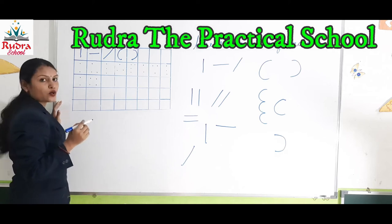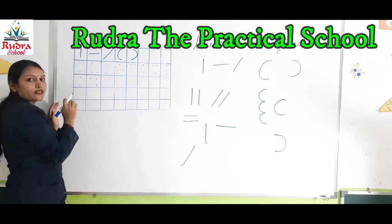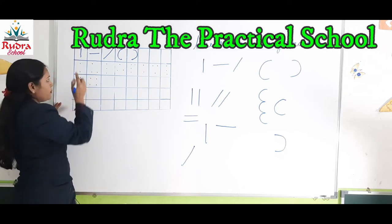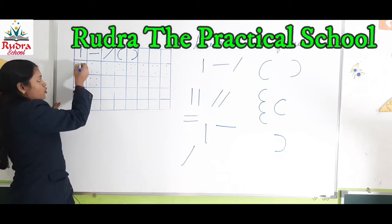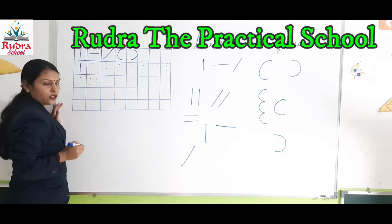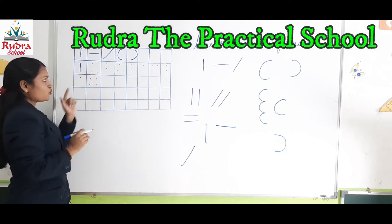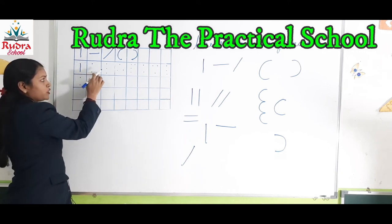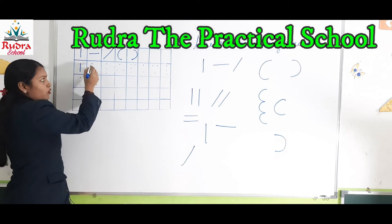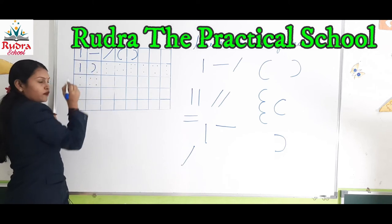See how to write numbers. These are two dots — join these two dots, this is number one. Now we will write number two with the help of three dots — make a curve.